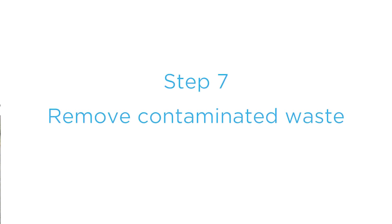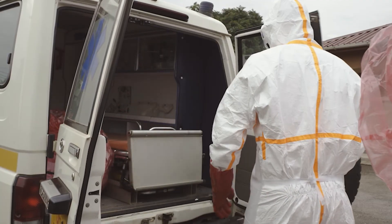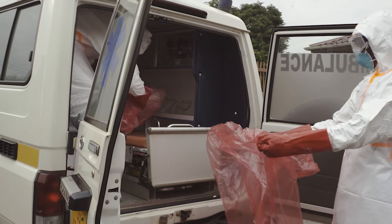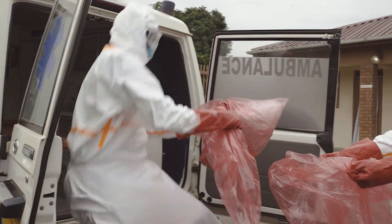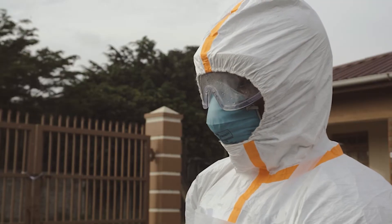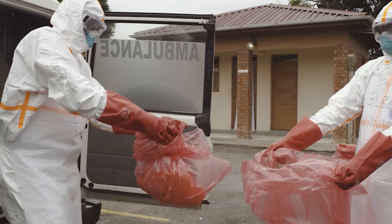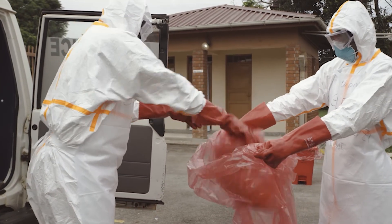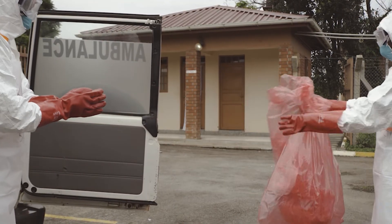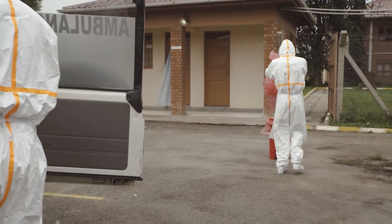A bin or bag to collect the contaminated personal protective equipment should be installed in this area. Step seven: remove contaminated waste. Leave the rear doors of the ambulance open to allow proper ventilation. A person inside the ambulance carefully removes contaminated waste and puts it in the waste bag. Carefully remove all the linen and put it in the plastic bag, then transfer the bagged waste and linen to the outside bins.